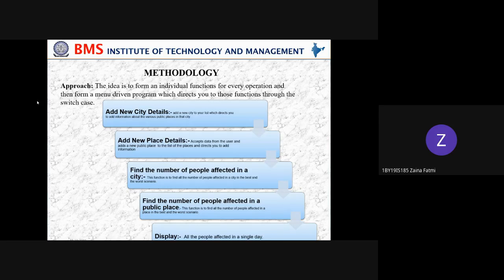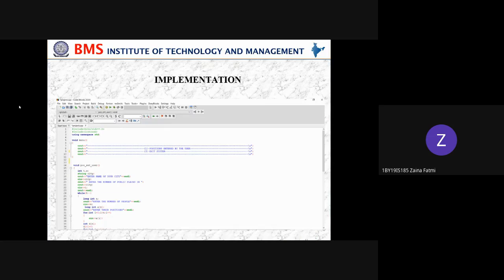Since it is impossible to determine the exact positions of people at a given point in real time, we are going to use features of HTML like geolocation to find the coordinates, and then apply this same logic to find the best and worst case scenarios. The function will then display the number of people affected in a single day.